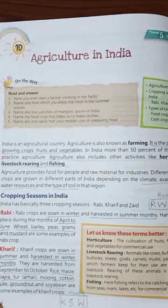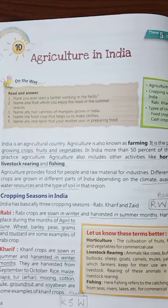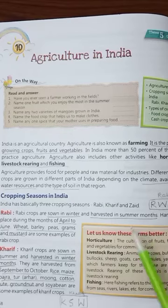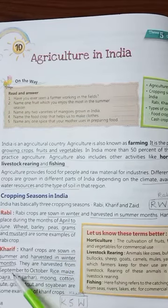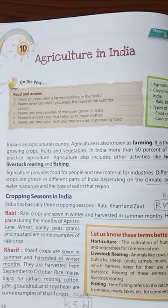Cropping seasons in India — there are three cropping seasons in India: Rabi, Kharif and Zaid. A cropping season refers to when the crop is sown and when it is harvested — harvested means when it is cut. So we are talking about three seasons: Rabi, Kharif and Zaid.